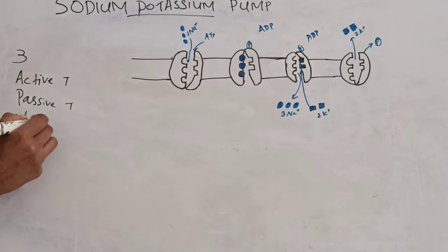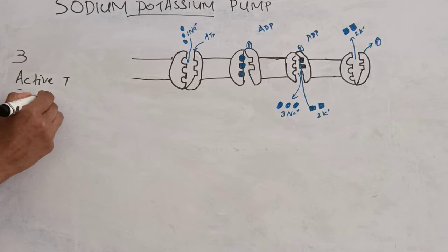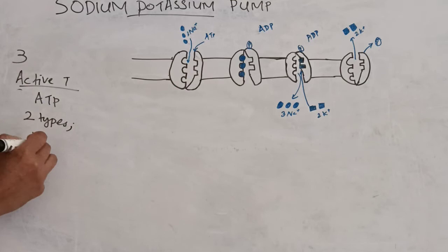Active transport is a type of cell transport that requires input of energy in the form of ATP. According to the source of energy, active transport is divided into two types: primary active transport and secondary active transport.